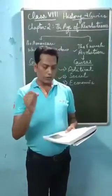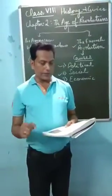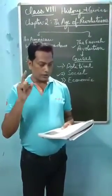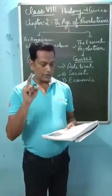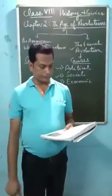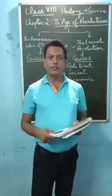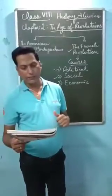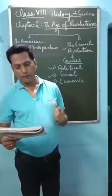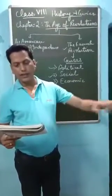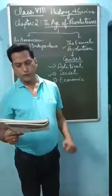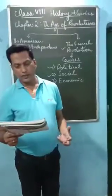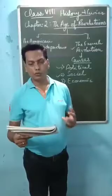When no agreement could be reached, the members of the third state formed the National Assembly on 17 June 1789. On 20 June 1789, members of the National Assembly met in a tennis court and vowed to stay united in their struggle to frame a constitution for the nation. This event is known as the Tennis Court Oath.